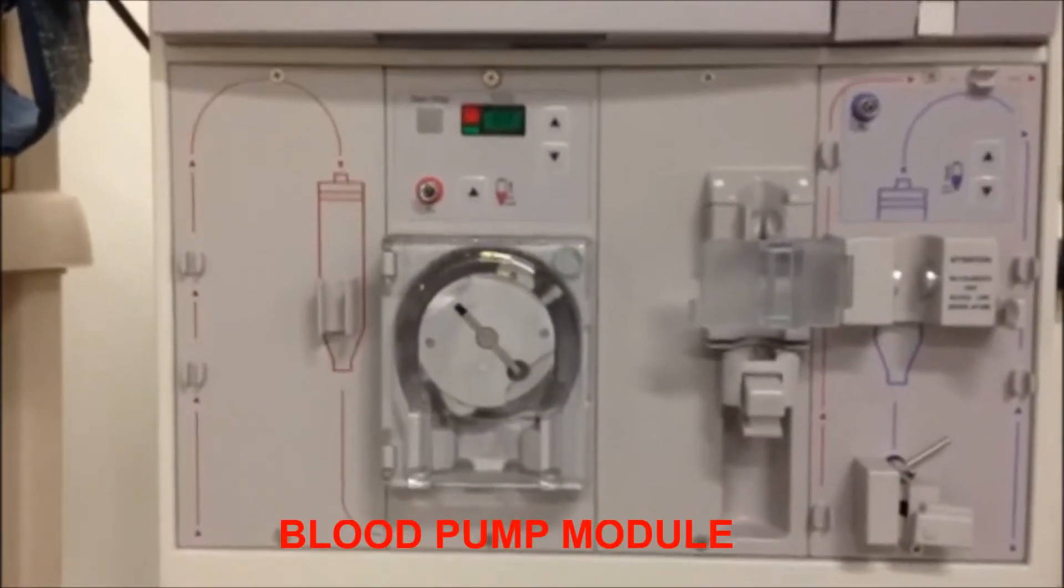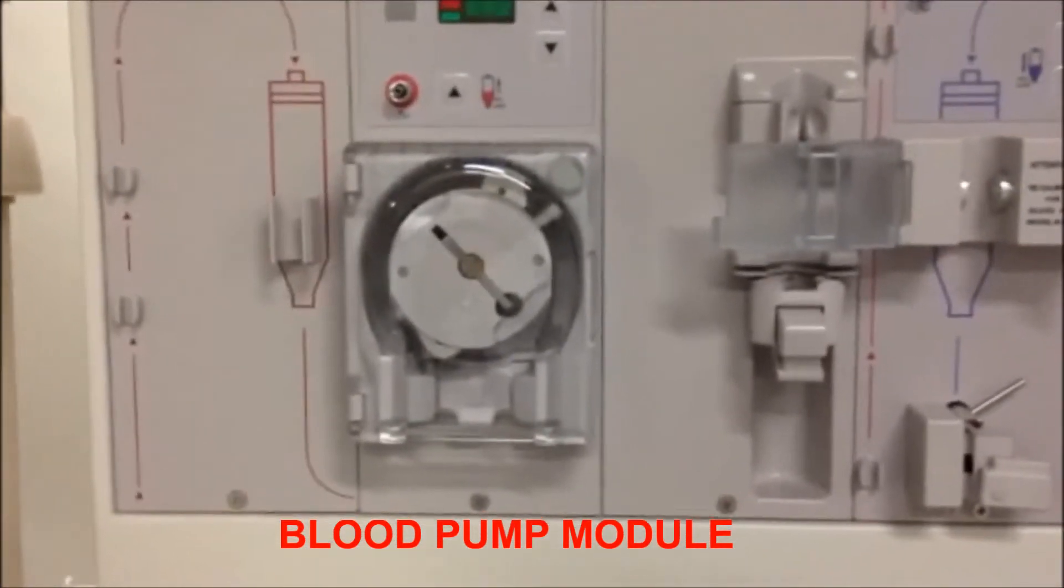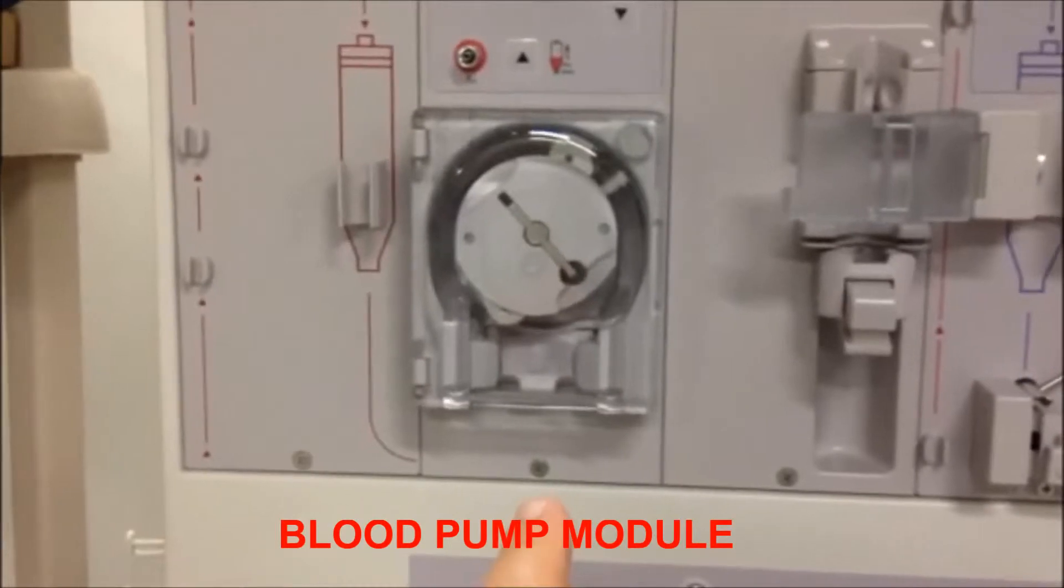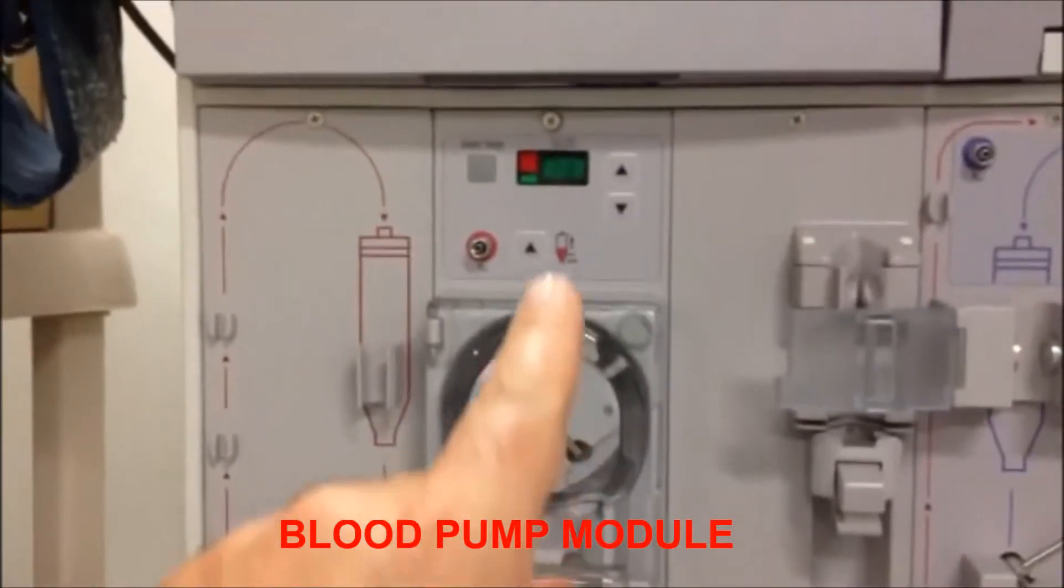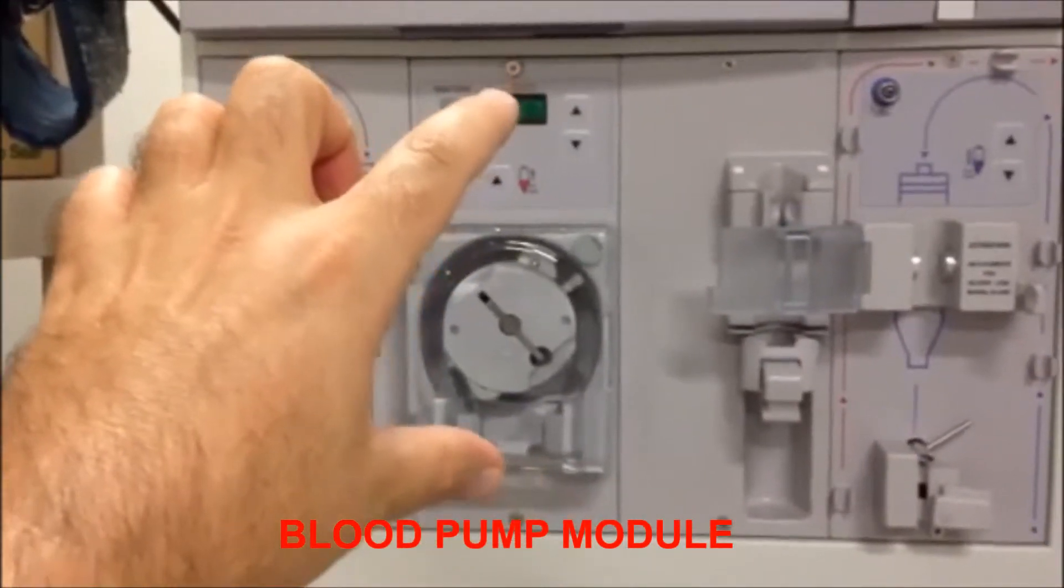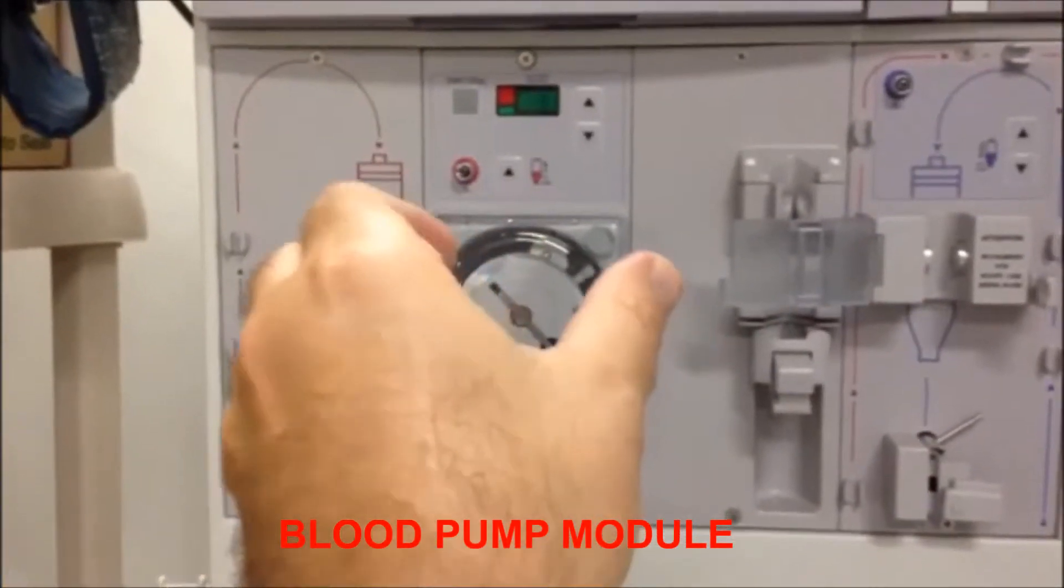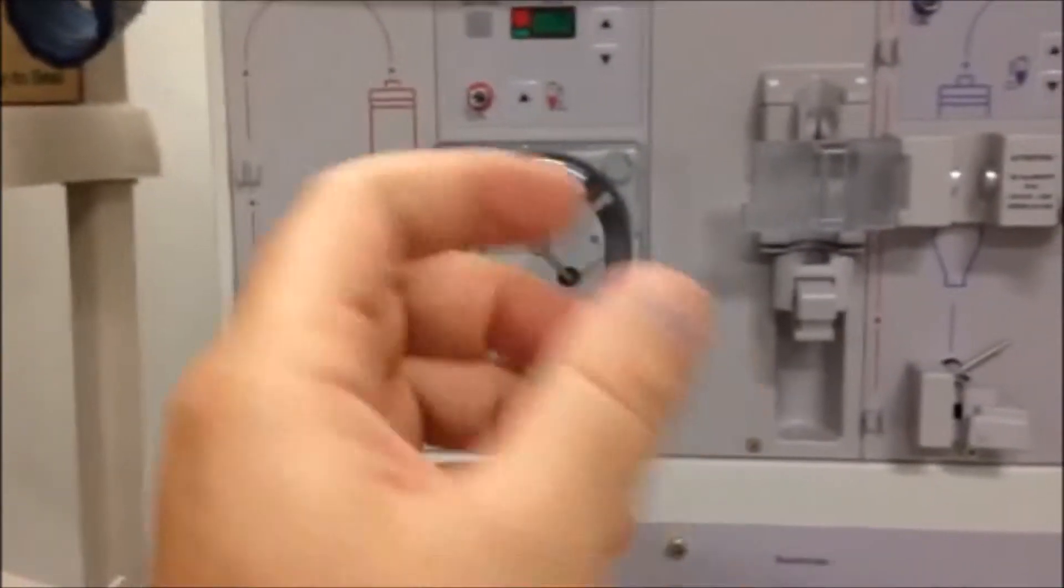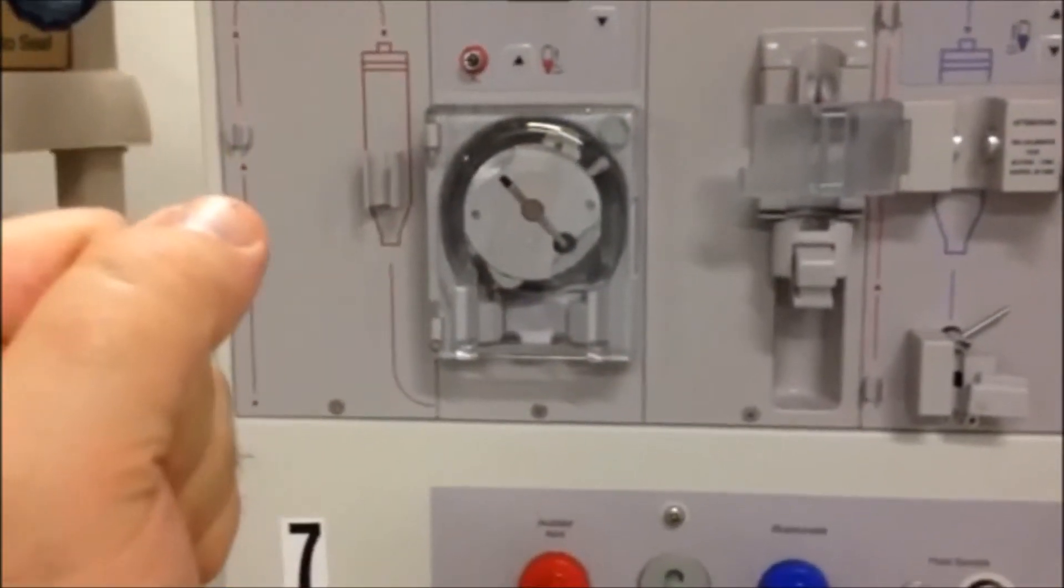This is the blood pump that is going to need to be removed. There is a screw right here, and there's another screw right here. When these screws are removed, this module will come out like a book but will be attached to elements from the back, and I will show you how it is attached.